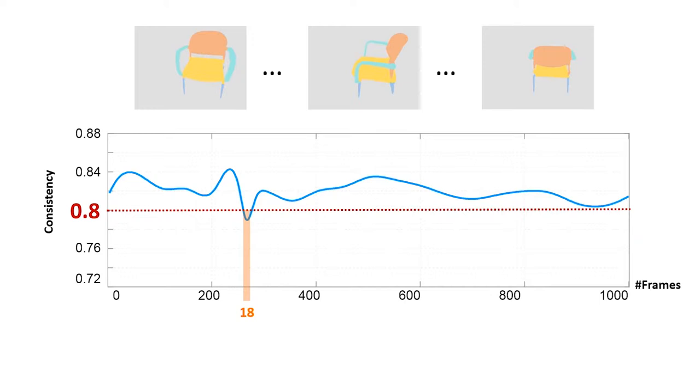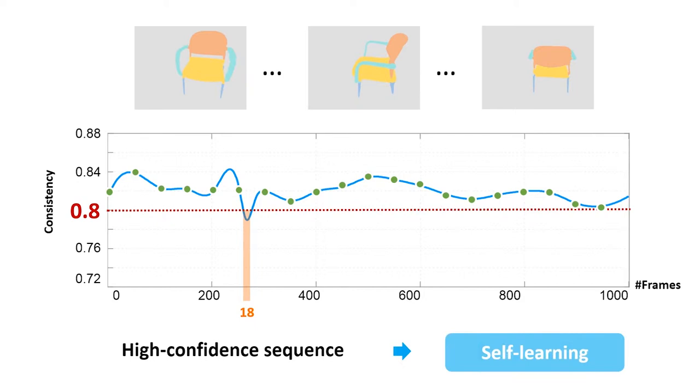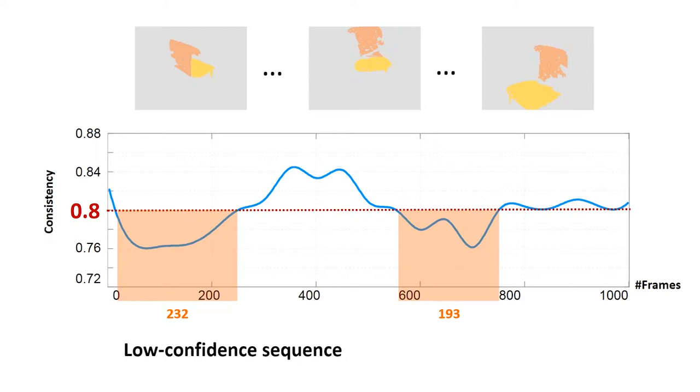Frames from high confidence sequences are uniformly sampled and fed to the framework for fine-tuning, which constitutes what we call a self-learning process. For a low confidence sequence with one or more low consistent subsequences, the active learning is conducted by selecting frames more from those subsequences and asking users to annotate these additional frames.